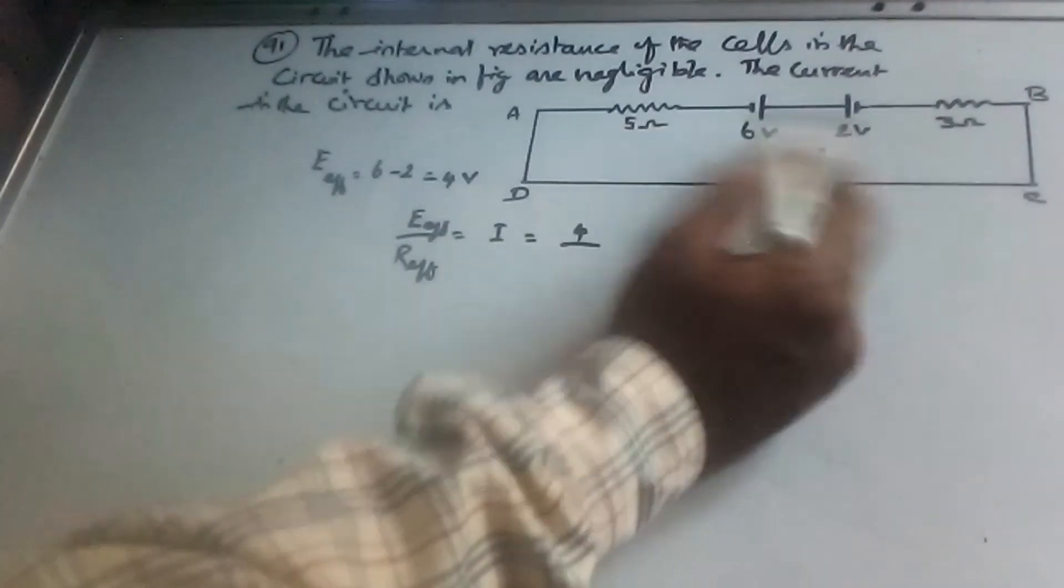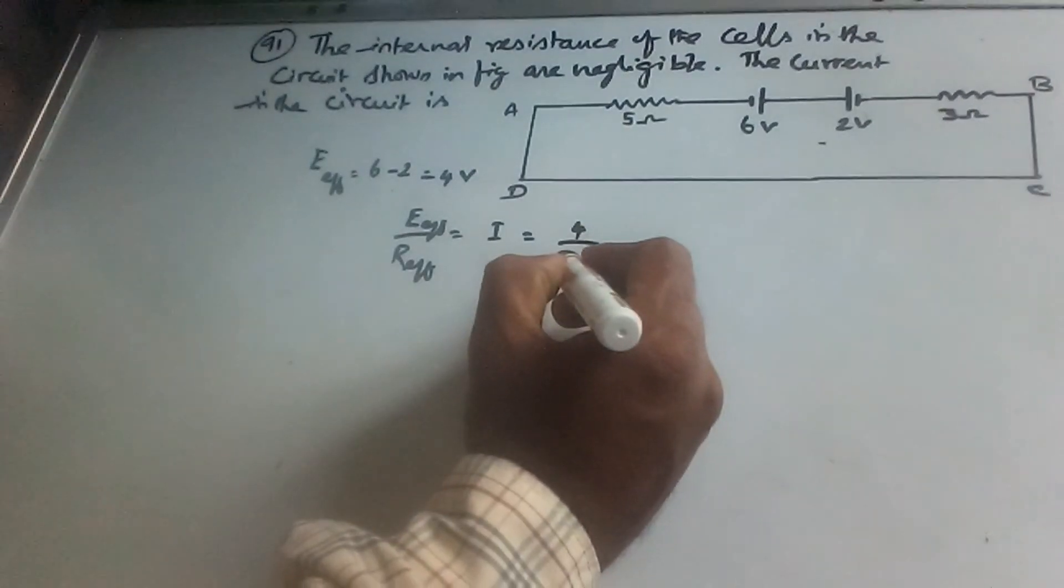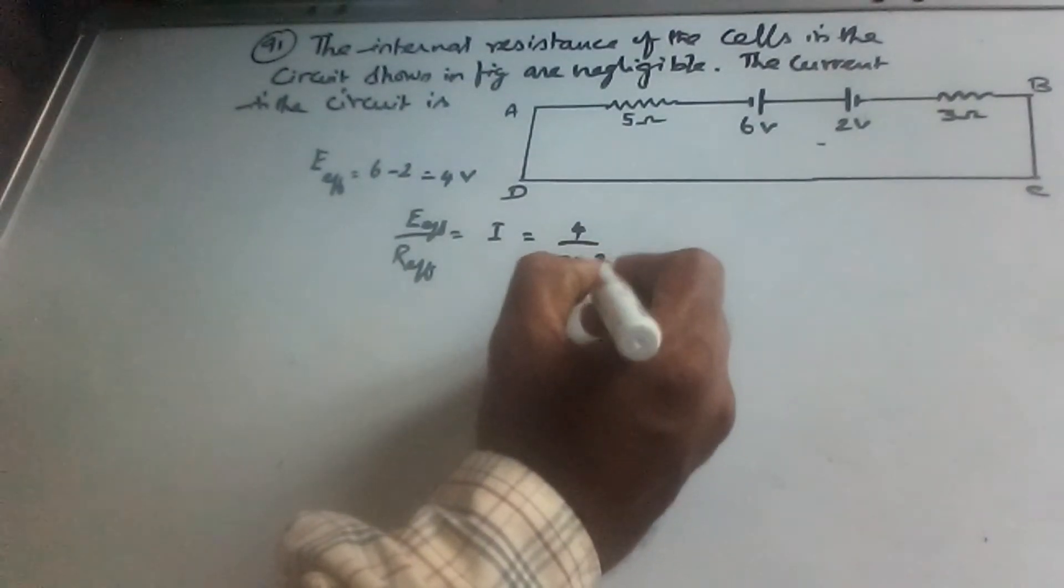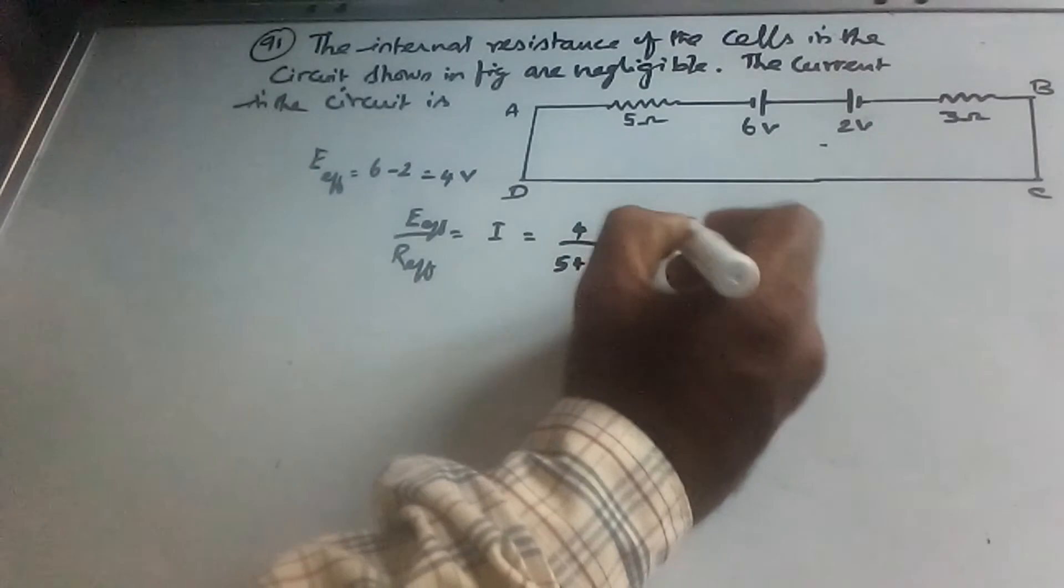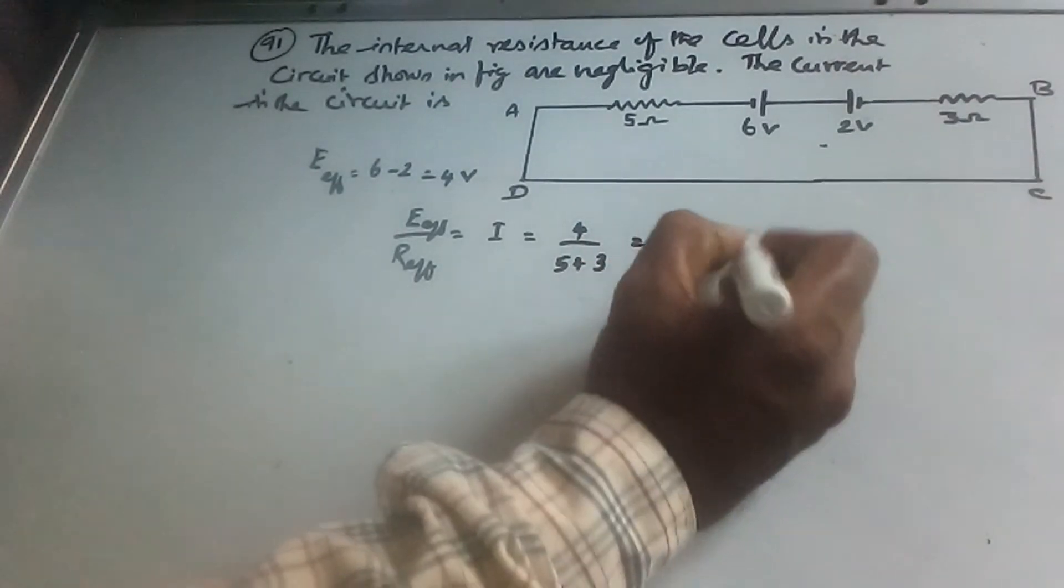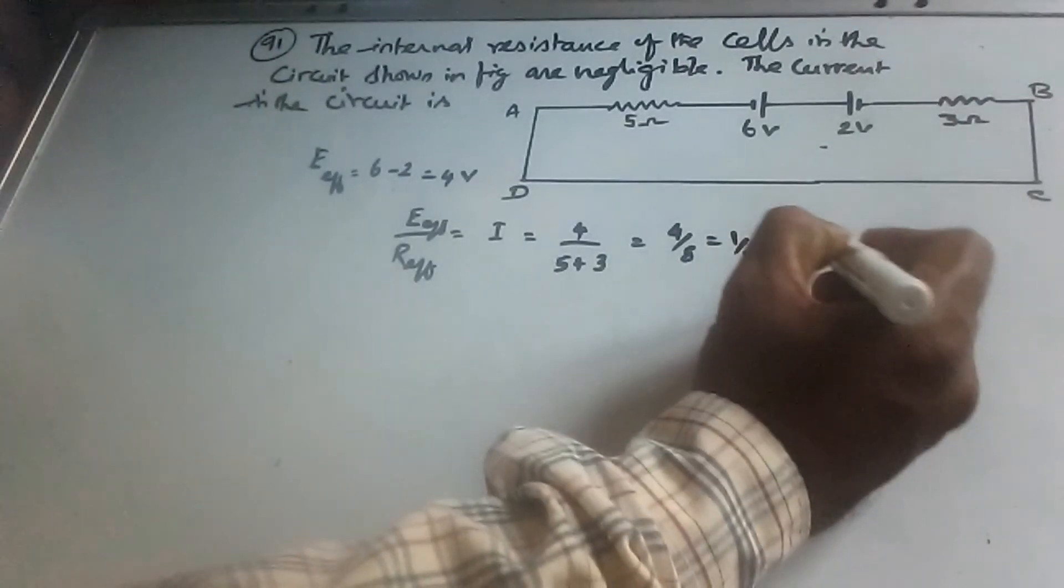Since both resistances are in series, the effective resistance is 5 plus 3. So 4 divided by 5 plus 3 equals 4 by 8, which equals one-half or 0.5 amperes.